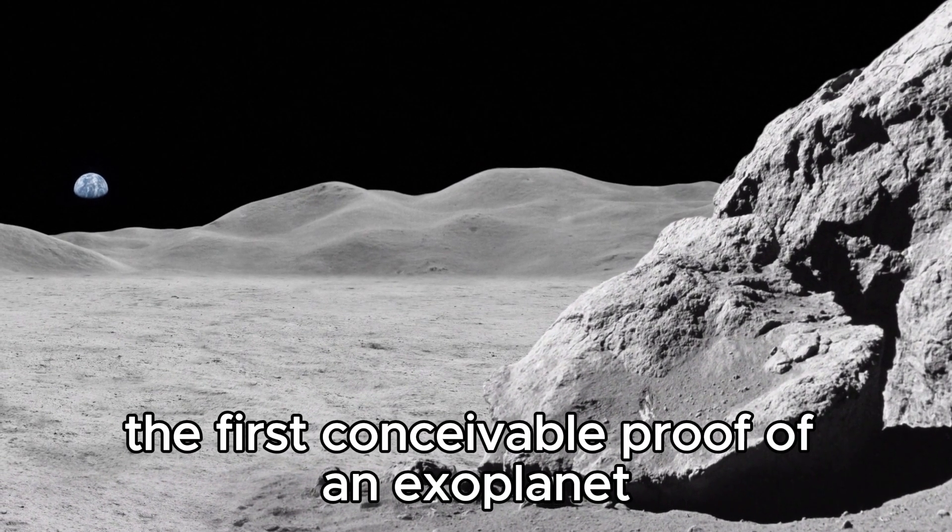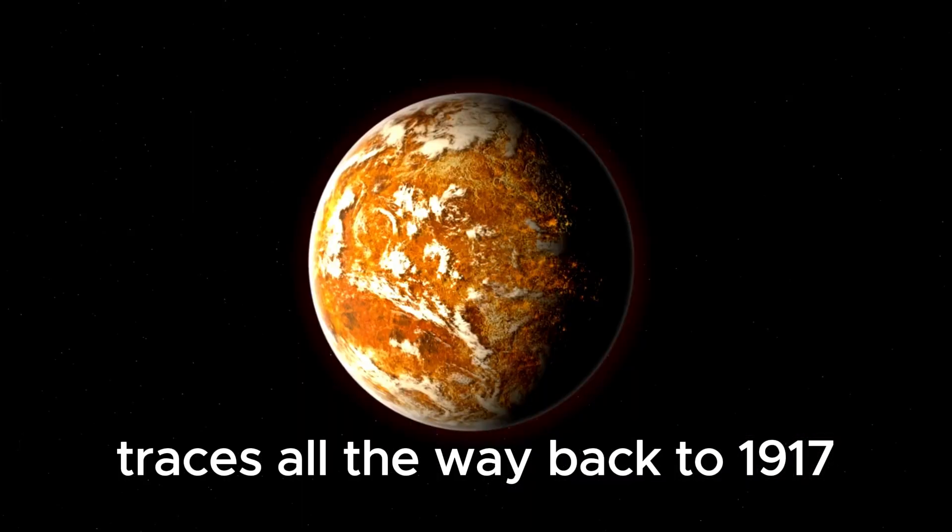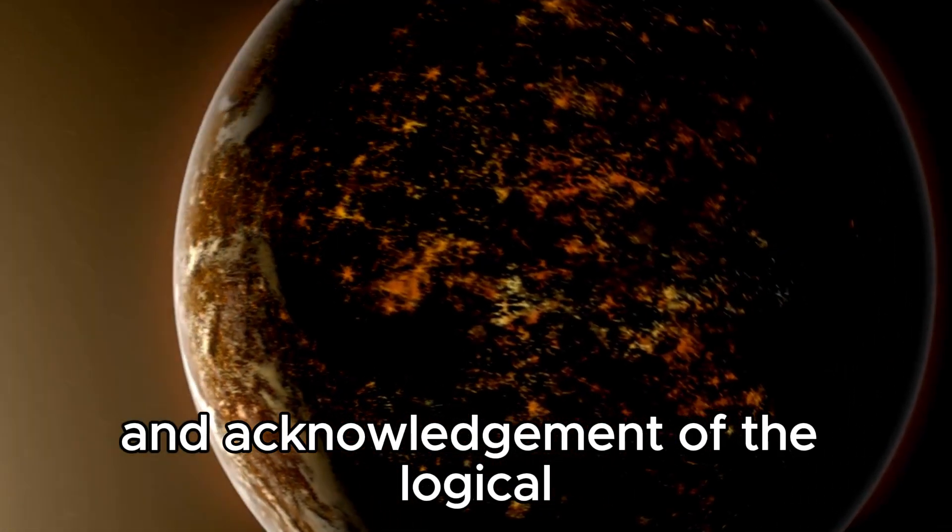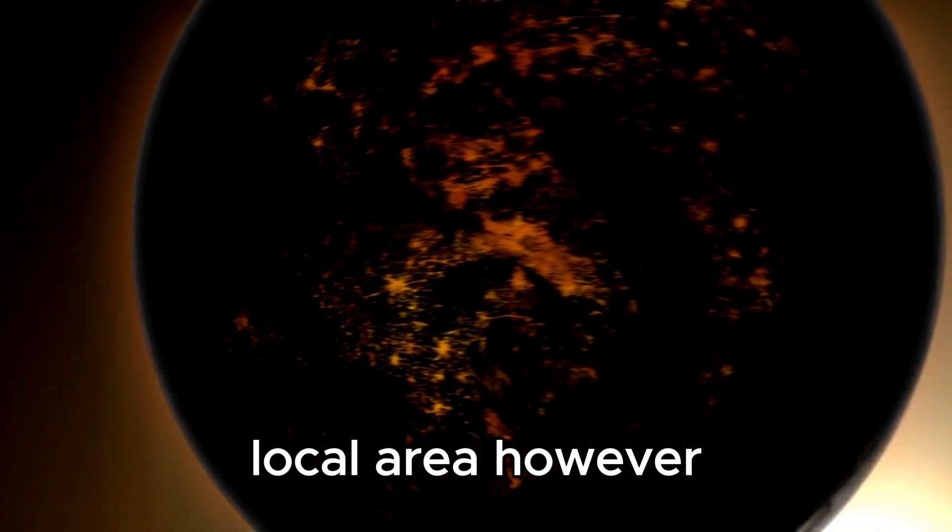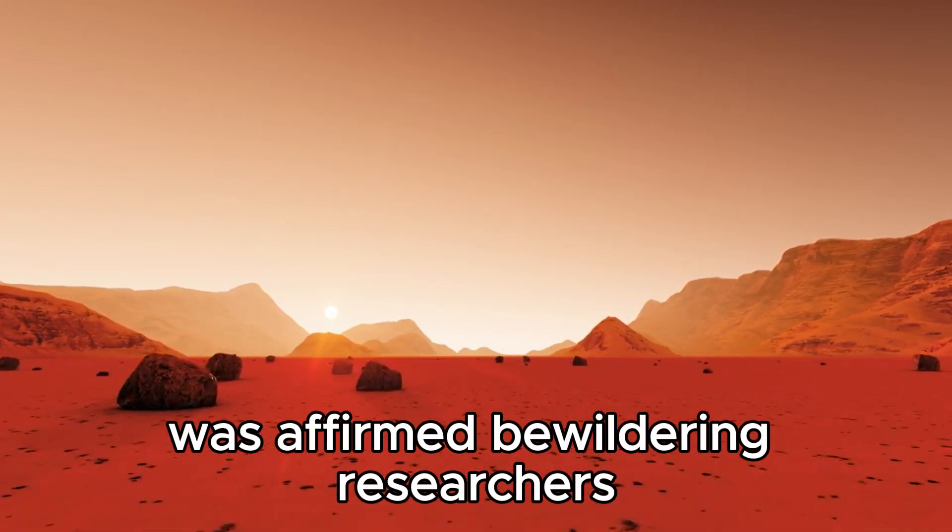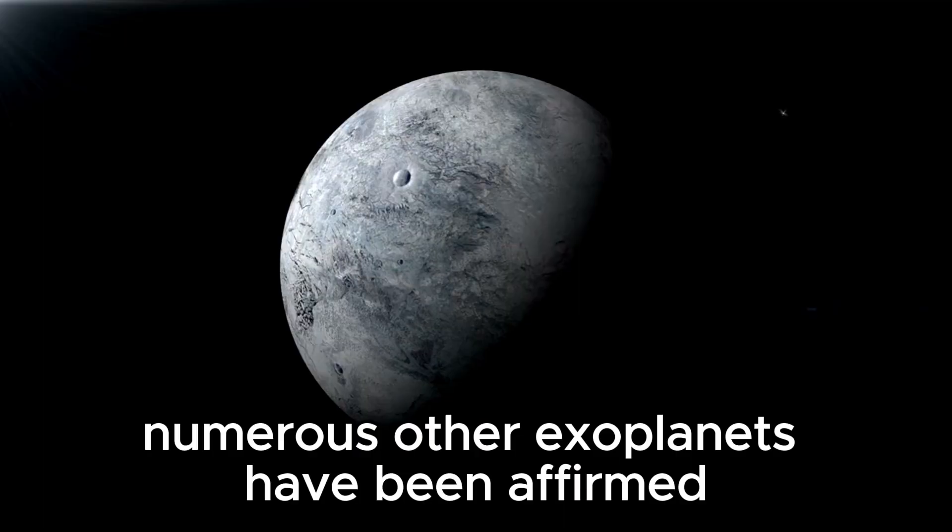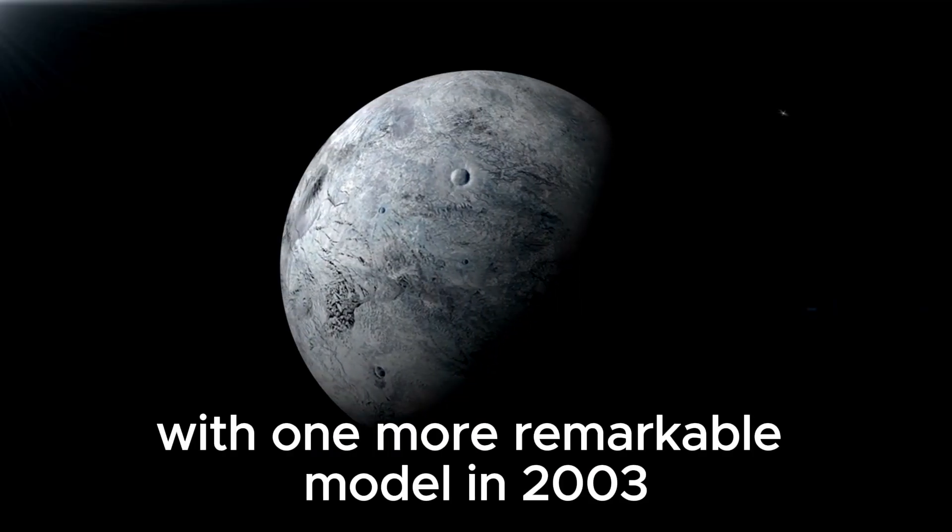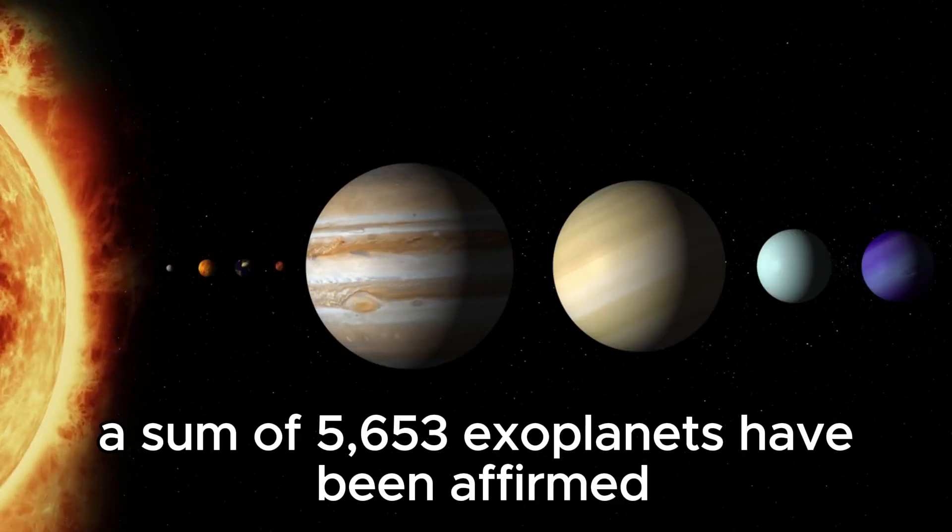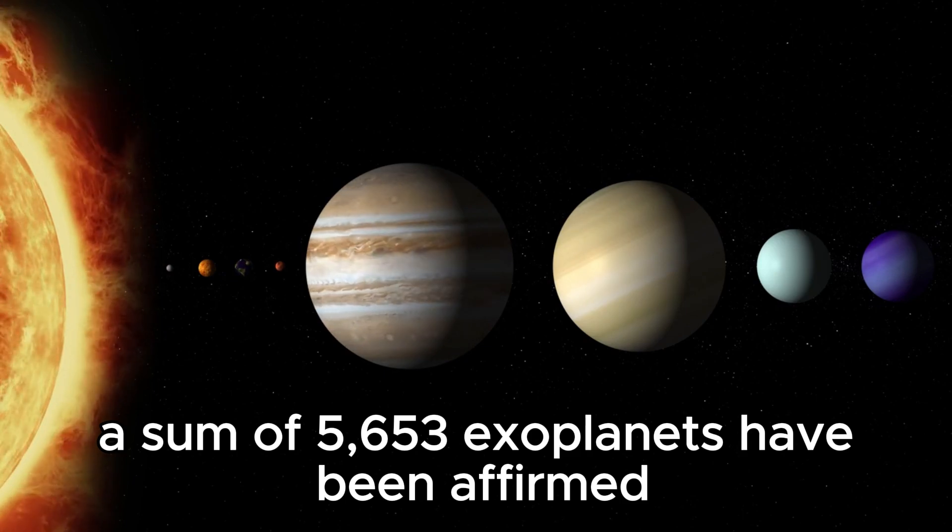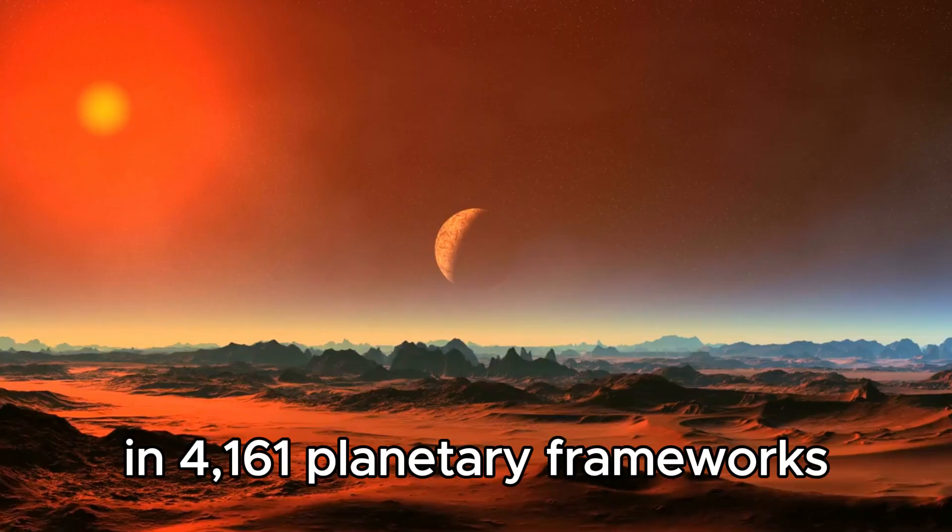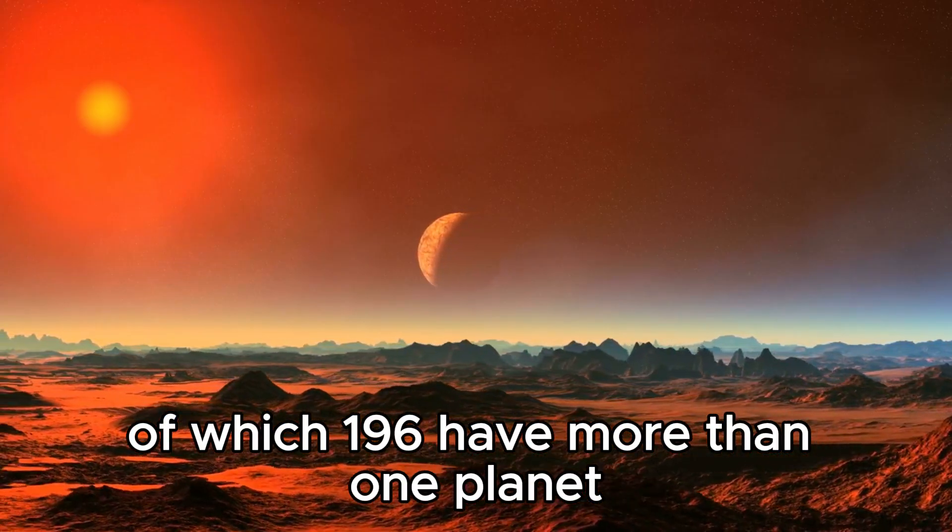The first conceivable proof of an exoplanet traces back to 1917, though at that time it scarcely caught the attention of the scientific community. However, it was in 1992 that the primary identification of an exoplanet was affirmed. From that point forward, numerous other exoplanets have been affirmed. By April 1st, 2024, a sum of 5,653 exoplanets have been confirmed in 4,161 planetary systems, of which 196 have more than one planet.